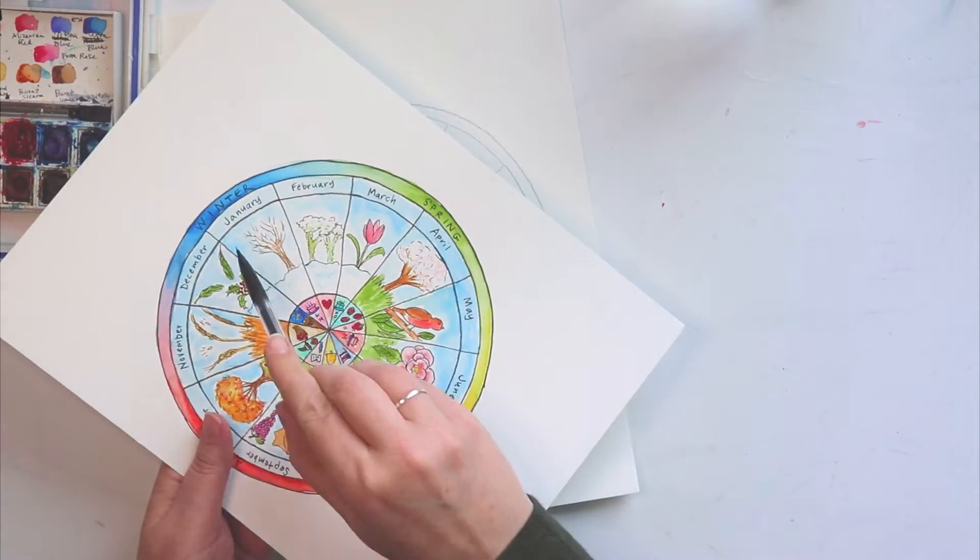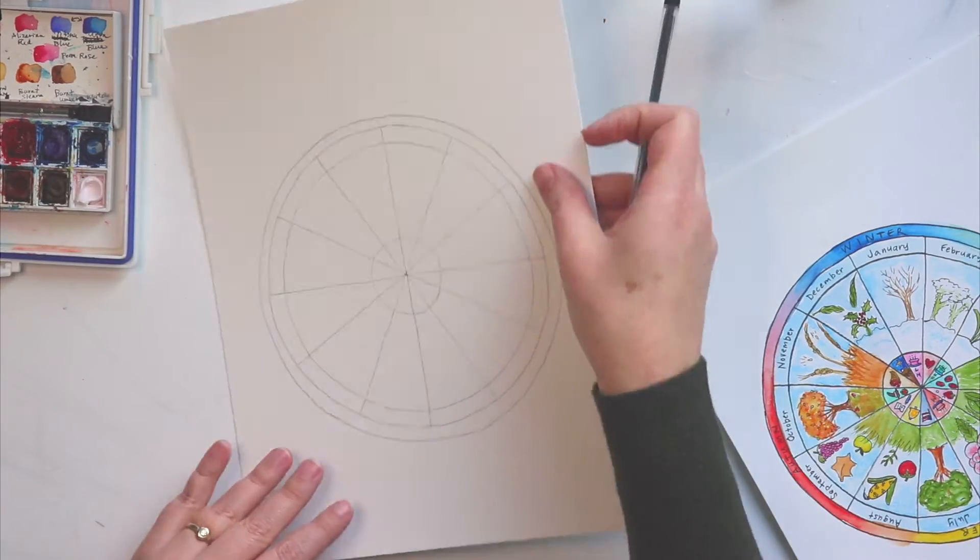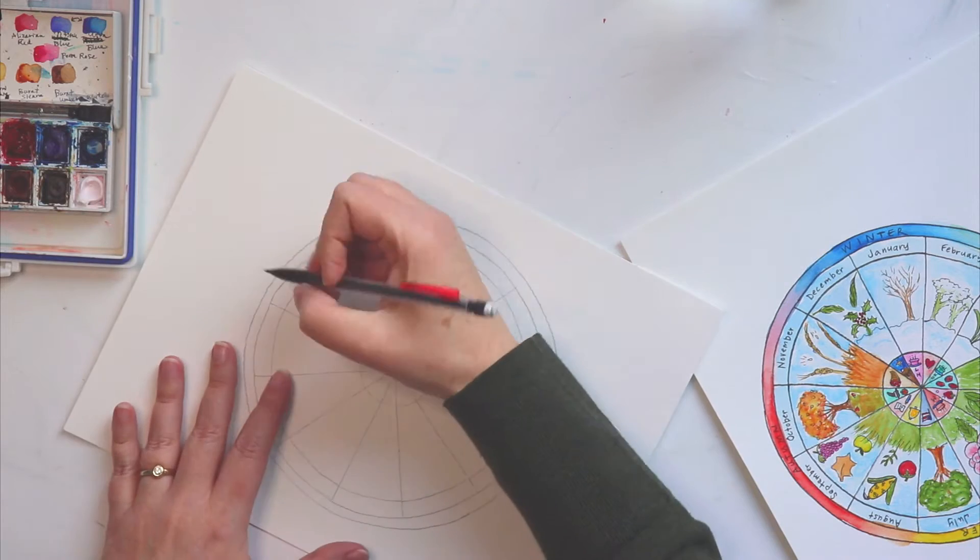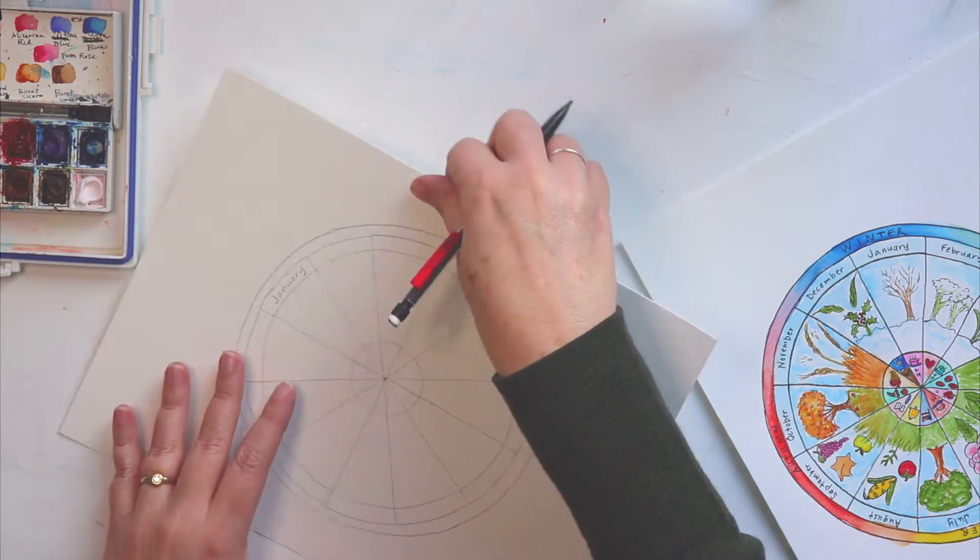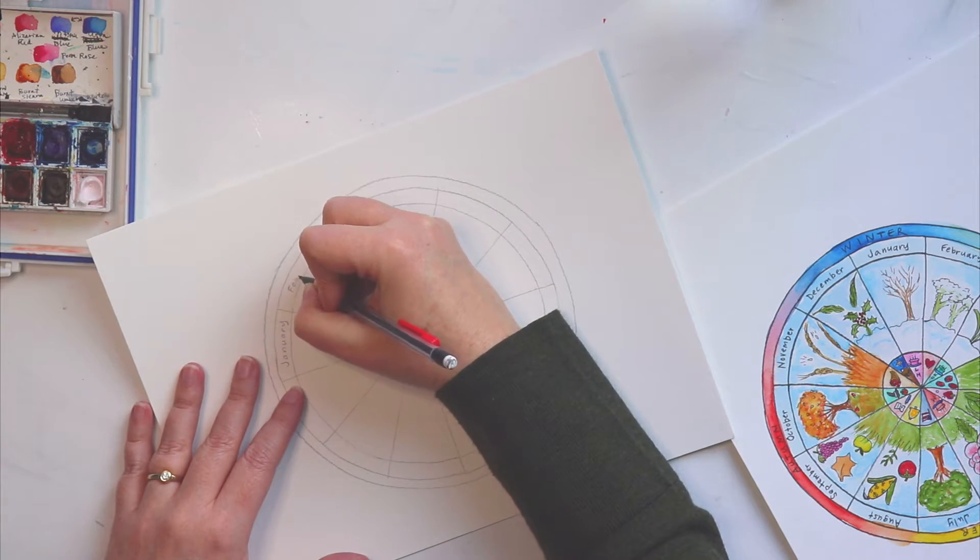This is where we're going to write, as you can see here, we're going to write our months right in there. So I'm going to start with January. You can start a phenology wheel any time of the year. I usually start mine in January and then just go through the year.